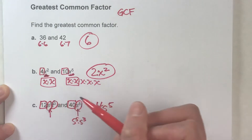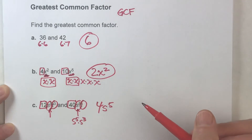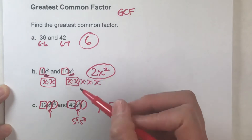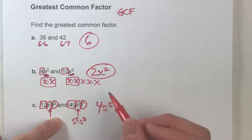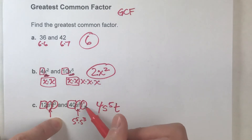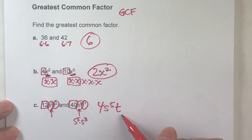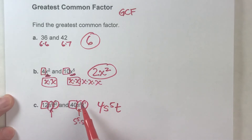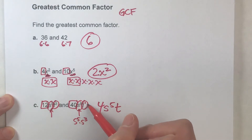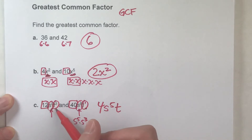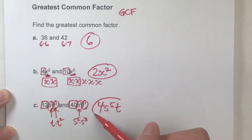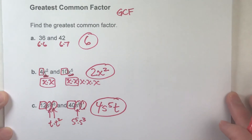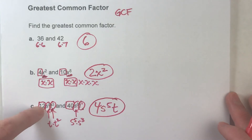Finally, let's do the t's. We have t to the 3rd and t with no exponent, which really means t to the 1st power. The greatest common factor is just t to the 1st, or t, because that's our smallest power of t — t times 1 gets me t, and t times t squared gets me t to the 3rd. So 4s to the 5th times t is going to be the greatest common factor of these two expressions.